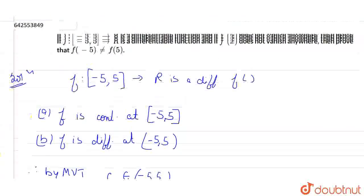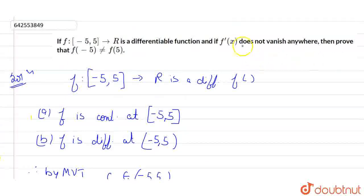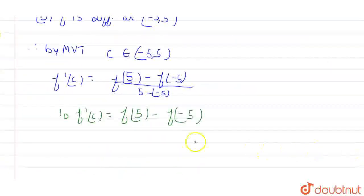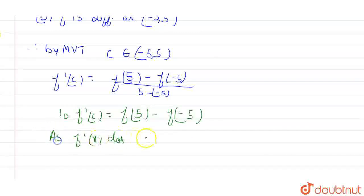And basically we can go to the question and see this important statement here: it does not vanish anywhere. f'(x) does not vanish anywhere, it means that f'(x) should never be equal to 0.